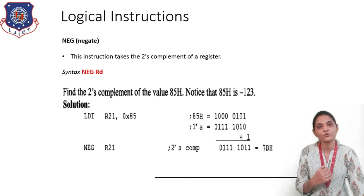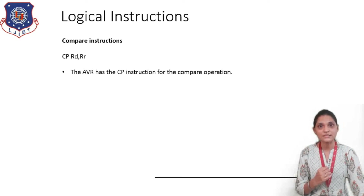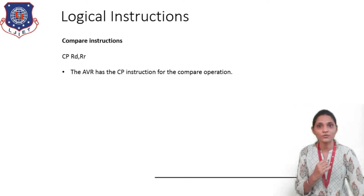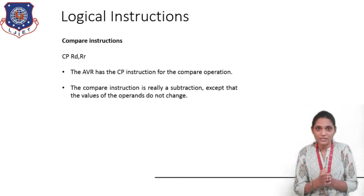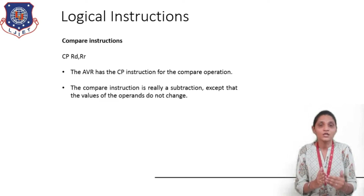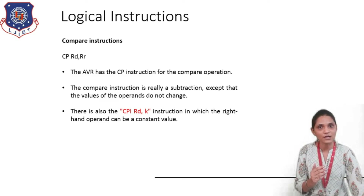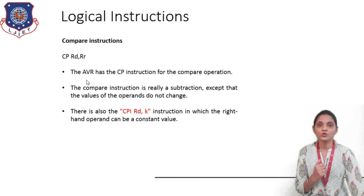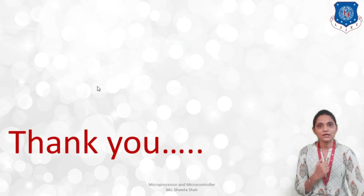Other than this, we can use the compare instruction for comparing the contents of two registers. The syntax is CP Rd, Rr — it compares the contents of registers Rd and Rr. For comparison, a subtraction operation is performed but no operands are changed — the contents of Rd and Rr remain as they are and only the flags are affected. You can also use CPI Rd, K — here you compare the content of register Rd with immediate data K. So you can use these compare instructions for logical tasks. Here we are ending today's session.